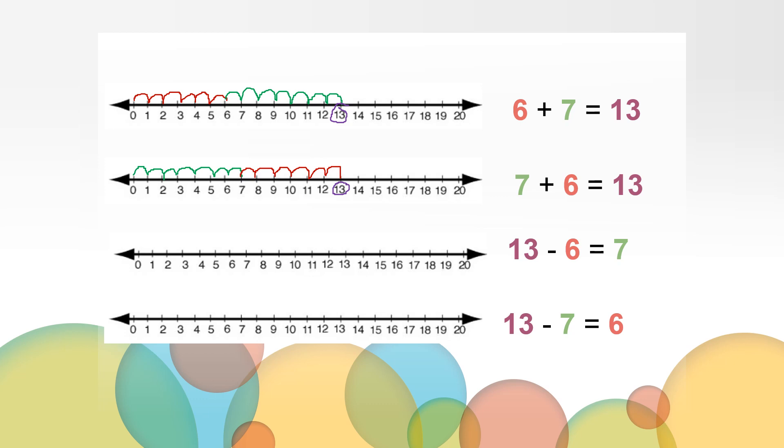Or we could start at the total, which is 13, take away one of the parts, in this one we would be taking away 6, so we would jump back or remove 6, and that gives us the answer or that other missing part, which is the total of that part 7. Or we could start at 13, remove the part 7, which would leave us with the other part, which is 6. Take a moment to look at these addition and subtraction facts, and think about how are they the same and how are they different.